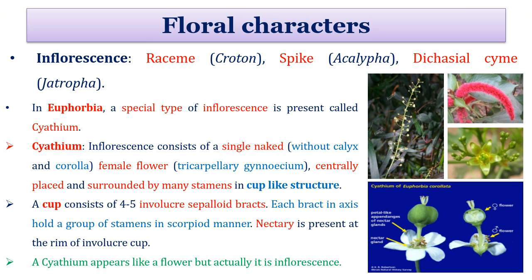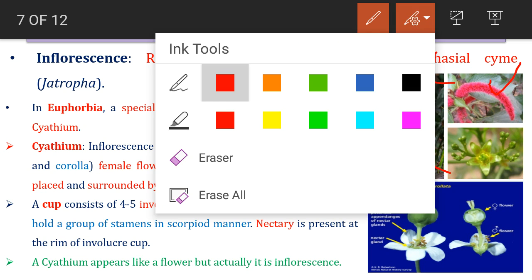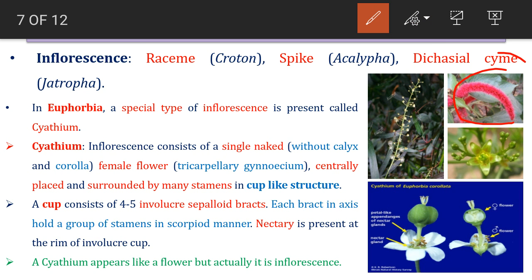Now in floral characters, the family shows raceme, spike, and dichasial cyme type of inflorescence. In raceme, the inflorescence axis is not terminated and it is indefinite; older flowers are present at the base and younger ones at the apex. A spike type of inflorescence is also reported — spike is actually a type of raceme, but here a pedicel is absent for each flower, so flowers are directly attached to the floral axis. Another type of inflorescence is the dichasial cyme; as it is a cyme, the inflorescence axis is terminated by a mature flower and younger flowers are present at the base.